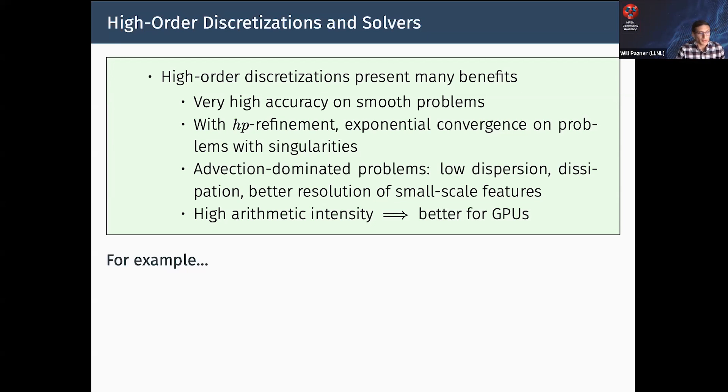Even for advection-dominated problems which may have sharp features or discontinuities, high-order methods have proven quite useful because of their low dispersion, low dissipation, and resolution for small-scale features. Rob Reuben mentioned one of the main reasons we're interested in higher-order methods is computing architecture - they have high arithmetic intensity and better GPU performance.